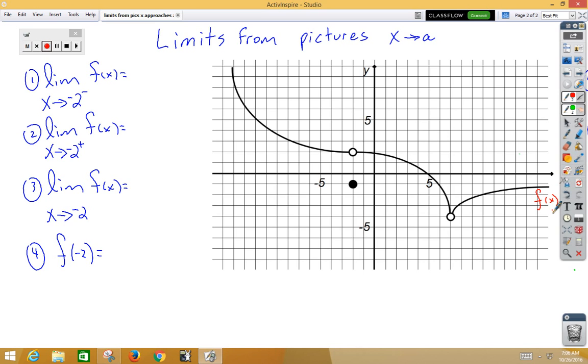Our first question is the limit as x approaches negative 2 from the left side. We know it's from the left side because of that negative in that position. What we do is we start all the way on the left side of the function, and we're going to move from the left towards negative 2.